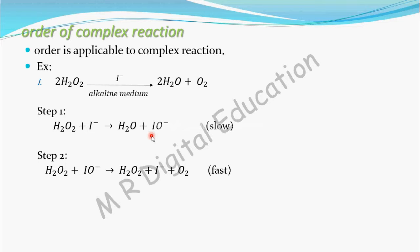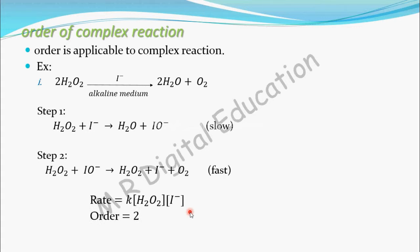In a complex reaction, the rate law is applicable to the slowest step. I have written the rate law for this step: rate = k × [H₂O₂] × [I⁻]. So the order of this rate law is 2. The rate law and order obtained from the slowest step of the complex reaction are applicable to the whole complex reaction.